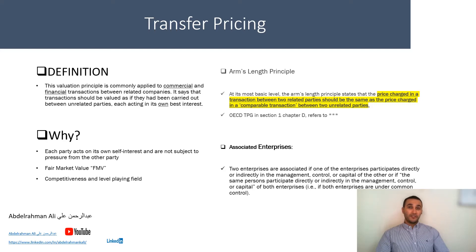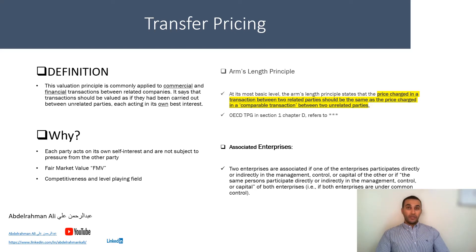For instance, if company A is a related party to company B — and in a moment we will understand what a related party or associated enterprise is — the same price should be charged for whatever commodity or service you are dealing with, as if it were an unrelated party.